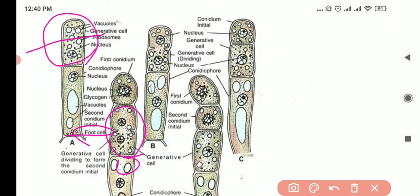Then this generative cell is dividing. We can see here it's starting to divide, and then you have a nucleus, a nucleus on both sides.